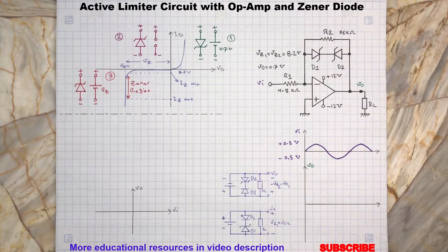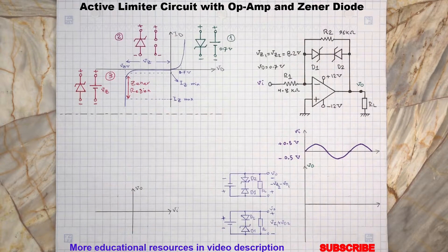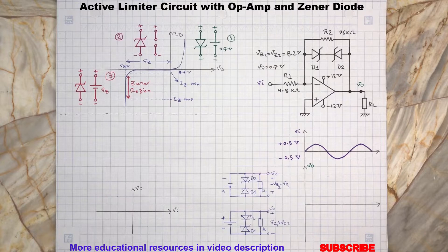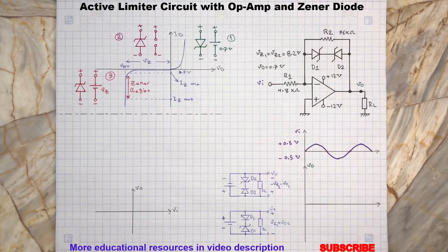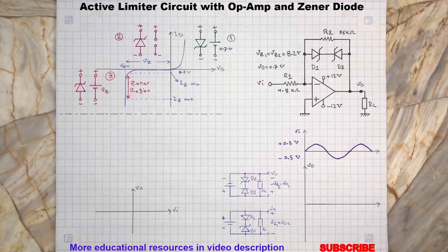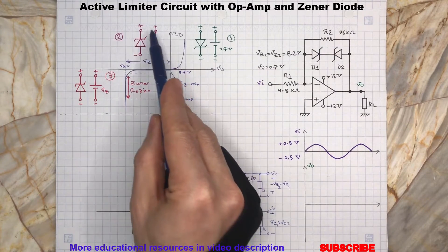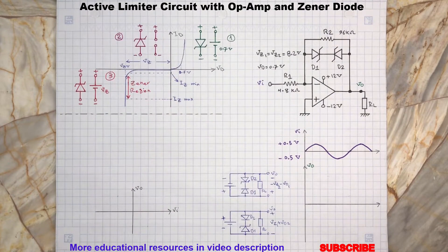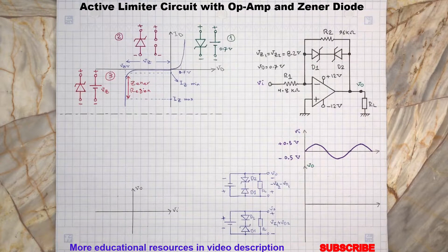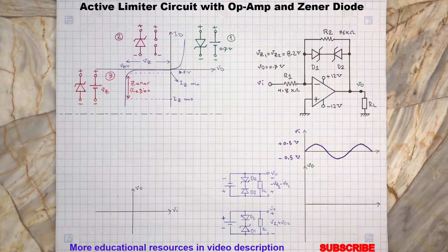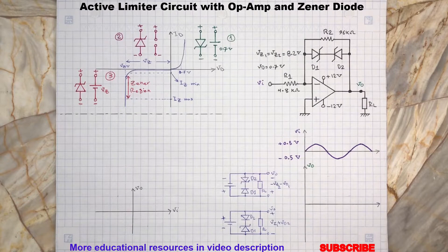The second region is when a Zener diode is reverse biased but before it gets to its breakdown point, so called breakdown or Zener voltage. In this case, a positive potential is applied to the cathode terminal and a negative potential to its anode terminal.